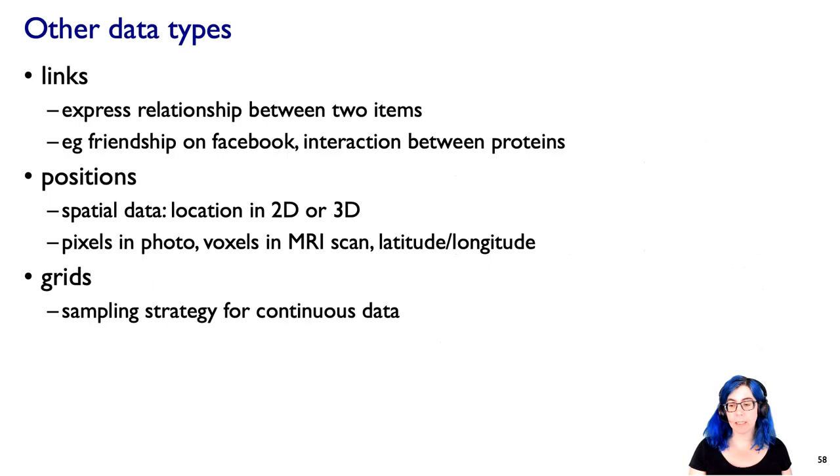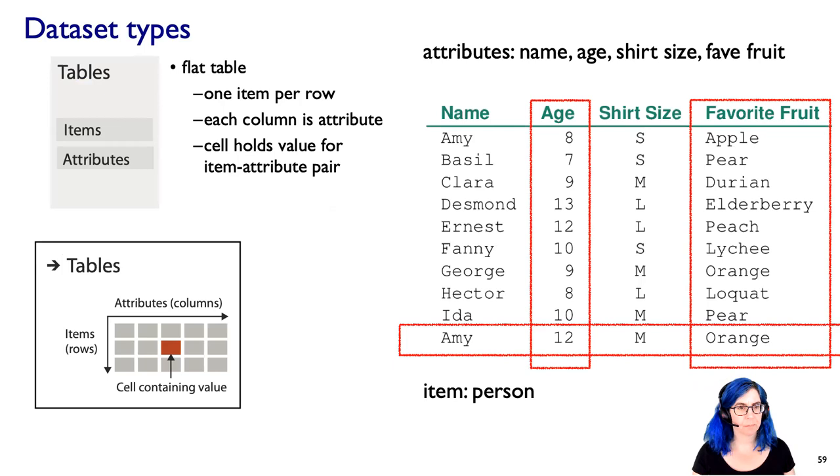There's other kinds of data. For example, a link is a way to express a relationship between two items, like friends on Facebook or proteins that interact with each other within a cell due to gene activity. So for positions, I actually do mean spatial positions, locations in two-dimensional space or three-dimensional space. It could be the location of a pixel within a photograph in 2D. It could be the voxels in an MRI scan if you have 3D medical imaging data. If you've got geographic data, that could be latitude and longitude. So this is intrinsically spatial position data. Or grids as a sampling strategy for continuous data, as we'll get to in just a minute.